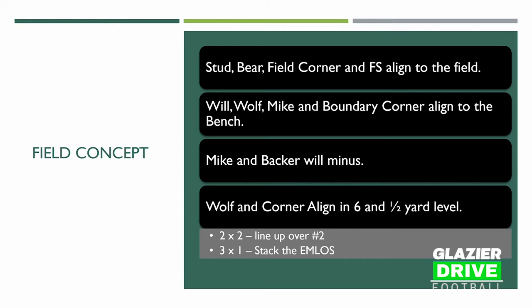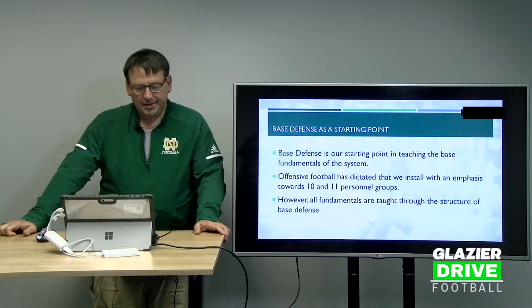I want to talk about playing a field defense. The first thing is aligning to the field — the field concept. Our stud, bear, field corner, and free safety will align to the field. Our will, wolf, mic, and boundary corner will align to the bench, and the mic and the backer will plus and minus to balance the formation. Our wolf and corner align at six and a half to seven yards at a level position. In a two-by-two formation, the wolf lines up directly over number two; in three-by-one, he stacks the end man on the line of scrimmage at seven yards.